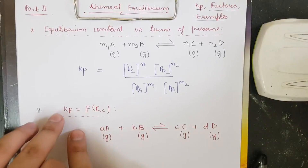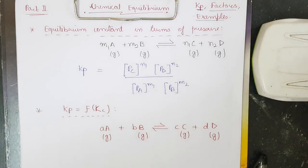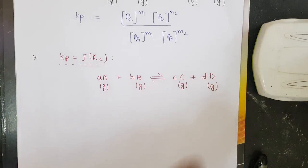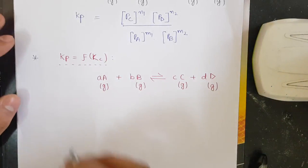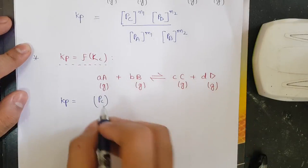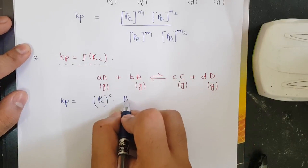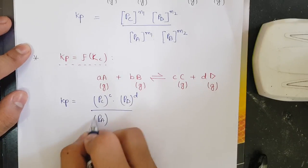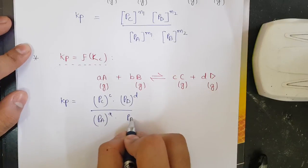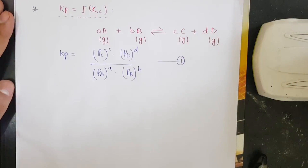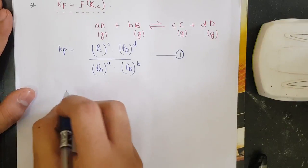Now let us derive the relation between Kp and Kc. We take the equation aA + bB → cC + dD, where all species are in the gaseous phase. Kp for this equation will be equal to the partial pressure of C raised to power c, times the partial pressure of D raised to power d, whole upon the partial pressure of A raised to power a, times the partial pressure of B raised to power b. Call this Equation 1.